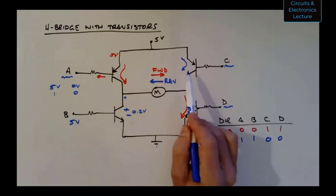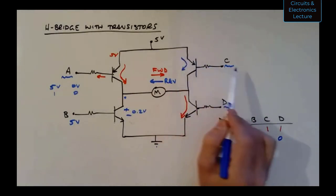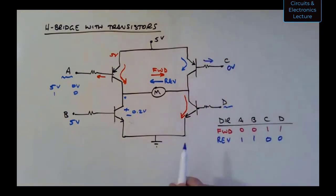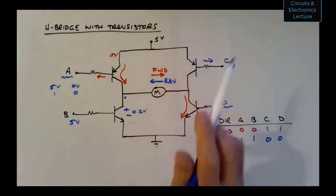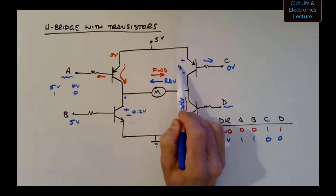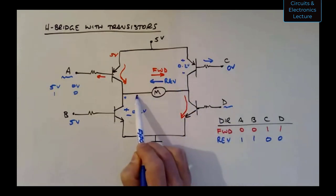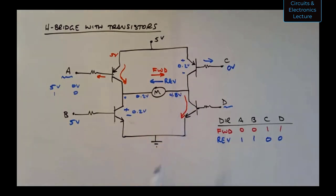Continuing the example: for transistor C at zero volts, current flows and you'd have about 0.2 volts at the left side of the motor. That means you'd have about 4.8 volts on the right side of the motor, so approximately 4.6 volts across the motor in operation.